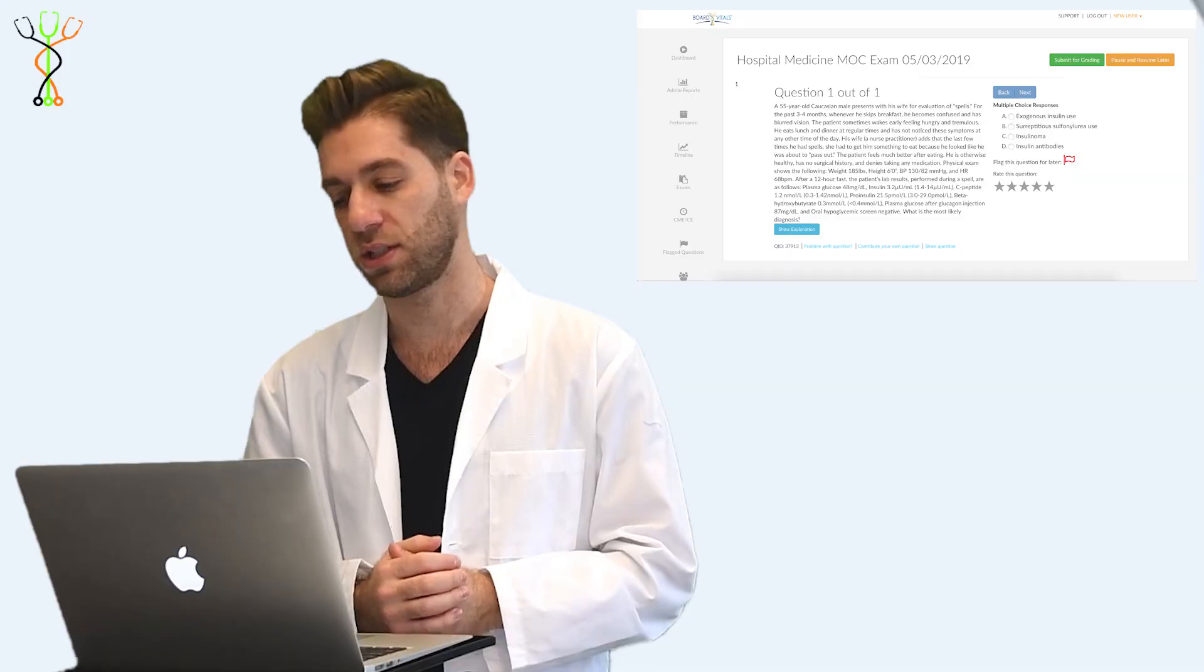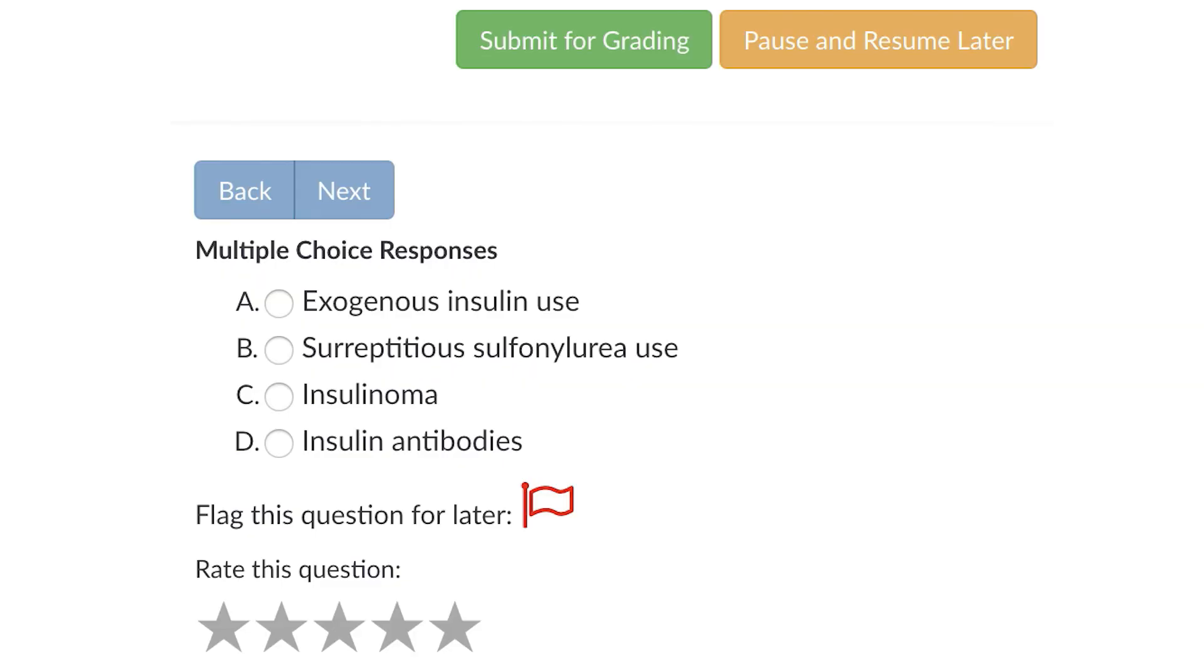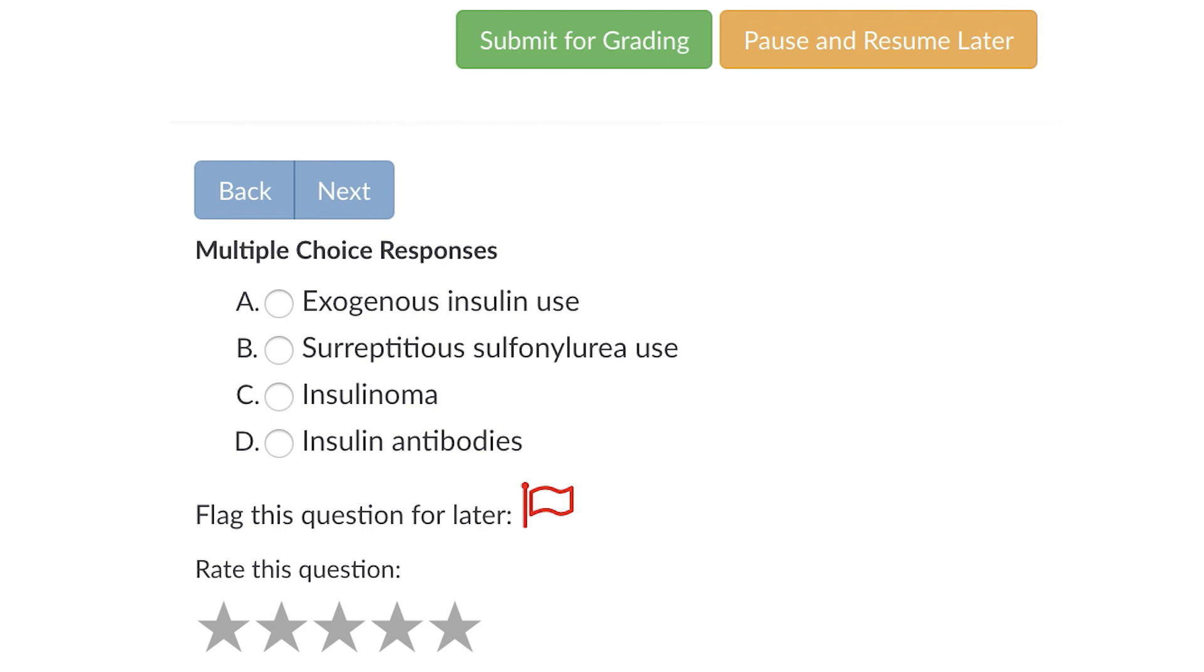The first answer choice is exogenous insulin use. Since we talked about the lab markers of C-peptide and pro-insulin being elevated, we can say that that is likely not the case. Surreptitious sulfonylurea use is ruled out because, like we said, his oral hypoglycemic screen was negative.